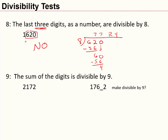The divisibility test for 9 is very similar to the test for 3. We look to see if the sum of the digits is divisible by 9. For example, 2,172: adding all the digits gives 12. Since 12 is divisible by 3, this number is a multiple of 3. But 12 is not divisible by 9, so 2,172 is not divisible by 9.